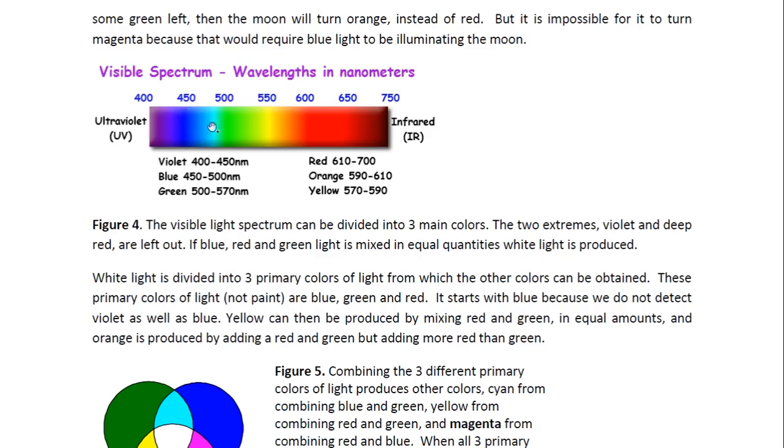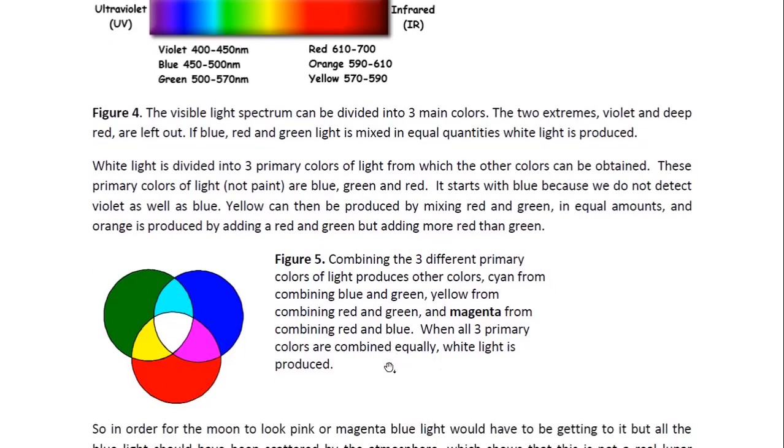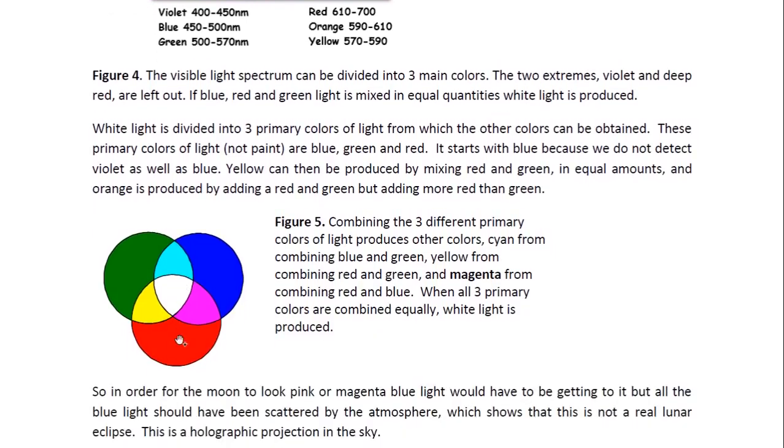For example, cyan is obtained by mixing blue and green. Yellow is obtained by mixing green and red in equal quantities. If you then just mix in a bit more red than green, you would get orange. In order to get magenta, you would have, this is illustrated here, you would have to mix equal quantities of blue and red. To get yellow, you mix equal quantities of green and red. And to get cyan, you mix equal quantities of green and blue. But to get the magenta, you would have to mix the red and the blue.